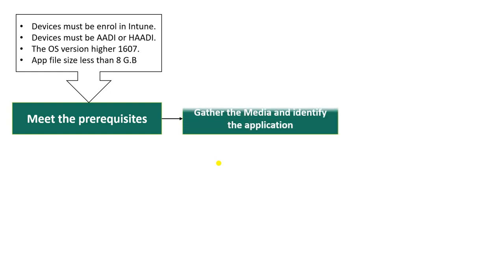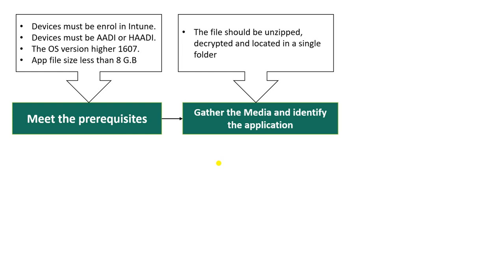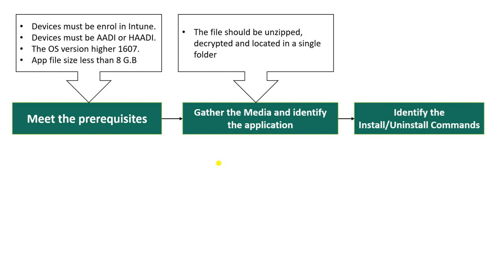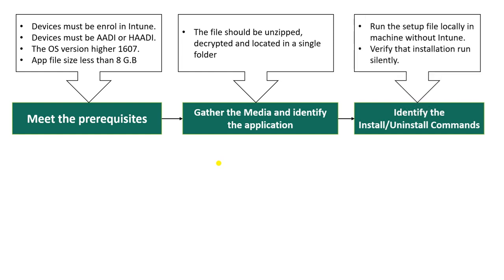Next, gather the media and identify the application. The files should be unencrypted and located in a single folder. Identify the install and uninstall commands — run the setup file locally on your machine without Intune, and verify the installation or run it silently. If this matches the requirement, then only you can proceed.